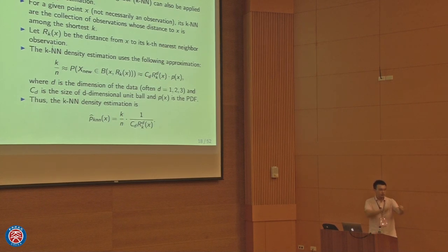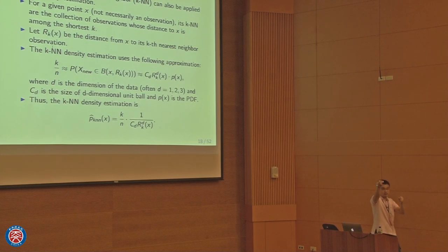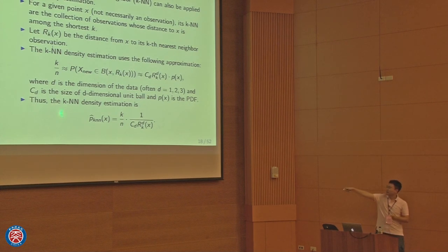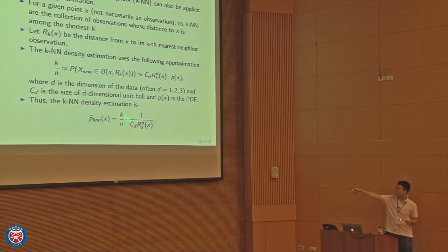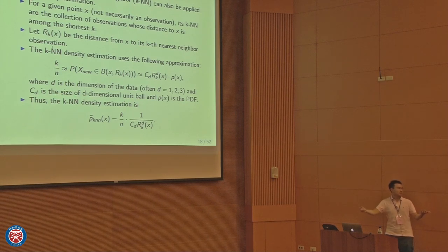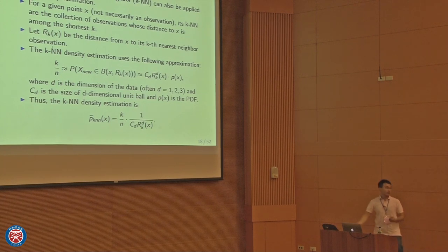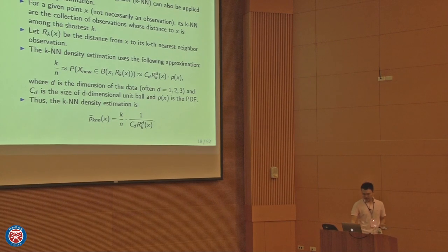As long as you know the distance to the k-nearest neighbor, you can invert that distance to get the density estimate. Here k is chosen by us, n is the sample size, c_d is the unit ball volume, and r_k is computed from the data. The KNN estimator also has a bias-variance tradeoff: in d=1, the variance is of order 1/k and the bias depends on the proportion of observations inside the region.